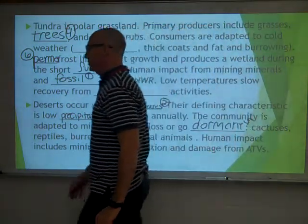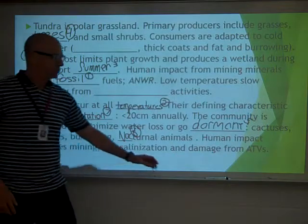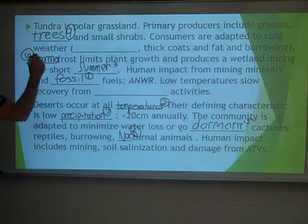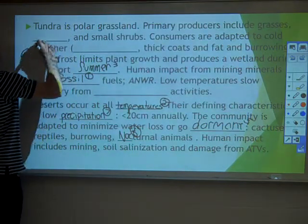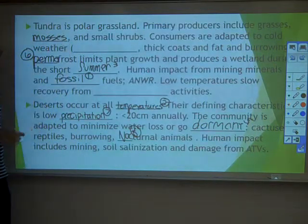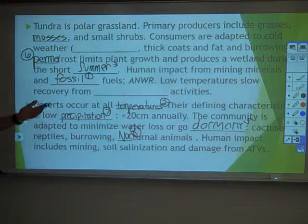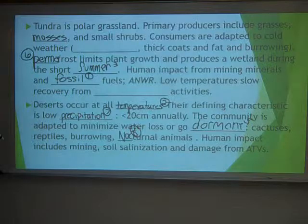Your polar grasslands are often called the tundra. Grasses are still the main primary producer, but this is one of the few major ecosystems where you see a lot of mosses. If it had trees it would be a forest, so grasslands typically have very few, if any, trees — and the same is true of the tundra.